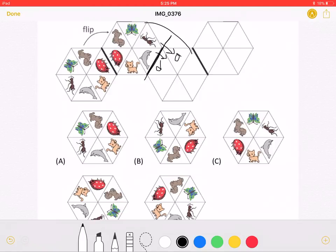The butterfly will be flipped over here, B. The dog will be flipped and end up over here. The cat will be flipped over here, and the ladybug over here.